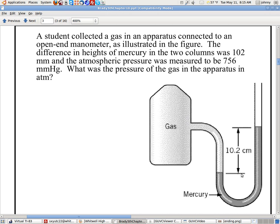Notice that they're showing us 102 millimeters. I know it says 10.2 centimeters, that's just a conversion. They did that just so you wouldn't have it easy. This is 102 millimeters. Notice that it's up high on this side. So we will add this height difference to the atmospheric pressure, which was 756.